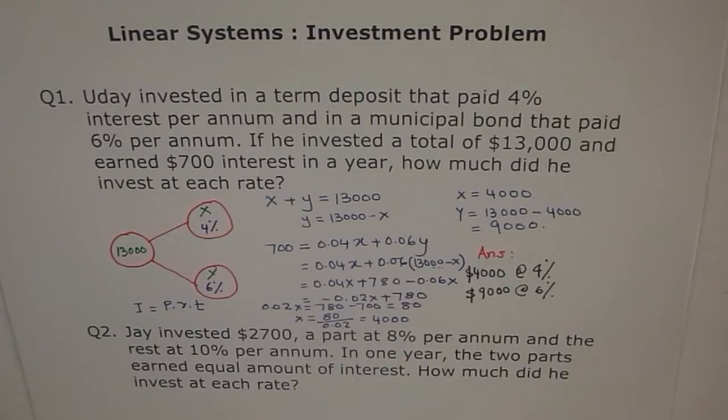I think that makes sense now. Try to understand how we did it, so that you could do the next problem on your own. Next problem. Let's read it. Jay invested $2,700. A part at 8% per annum. And the rest is 10% per annum. In one year, the two parts earned equal amounts of interest. How much did he invest at each?